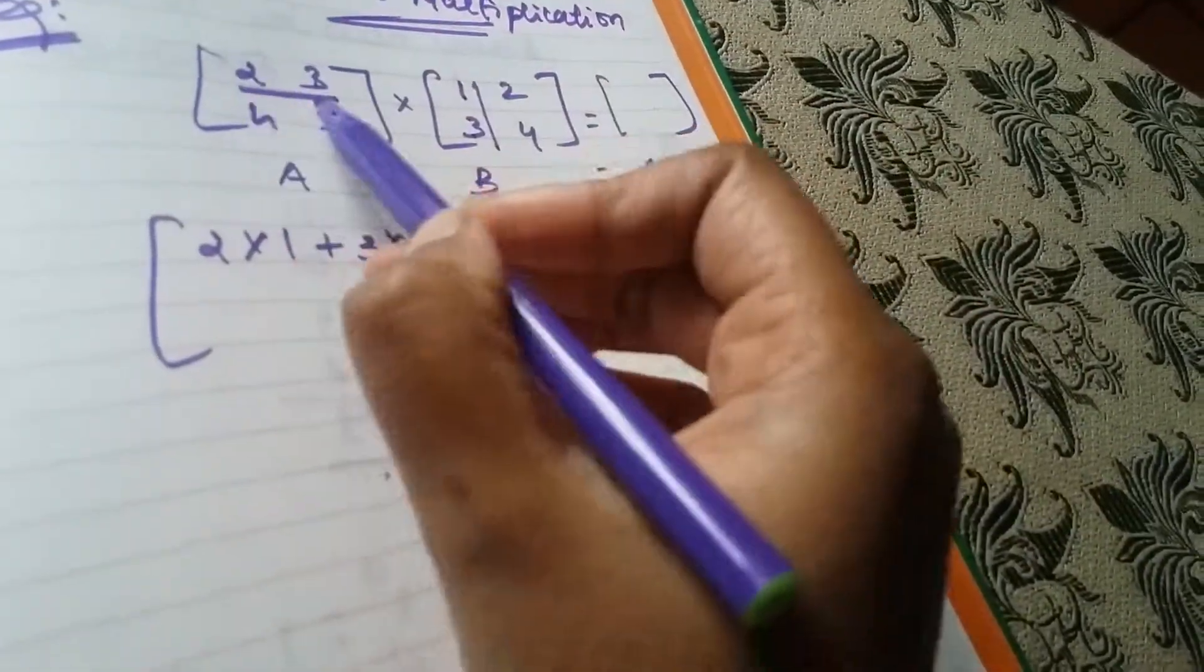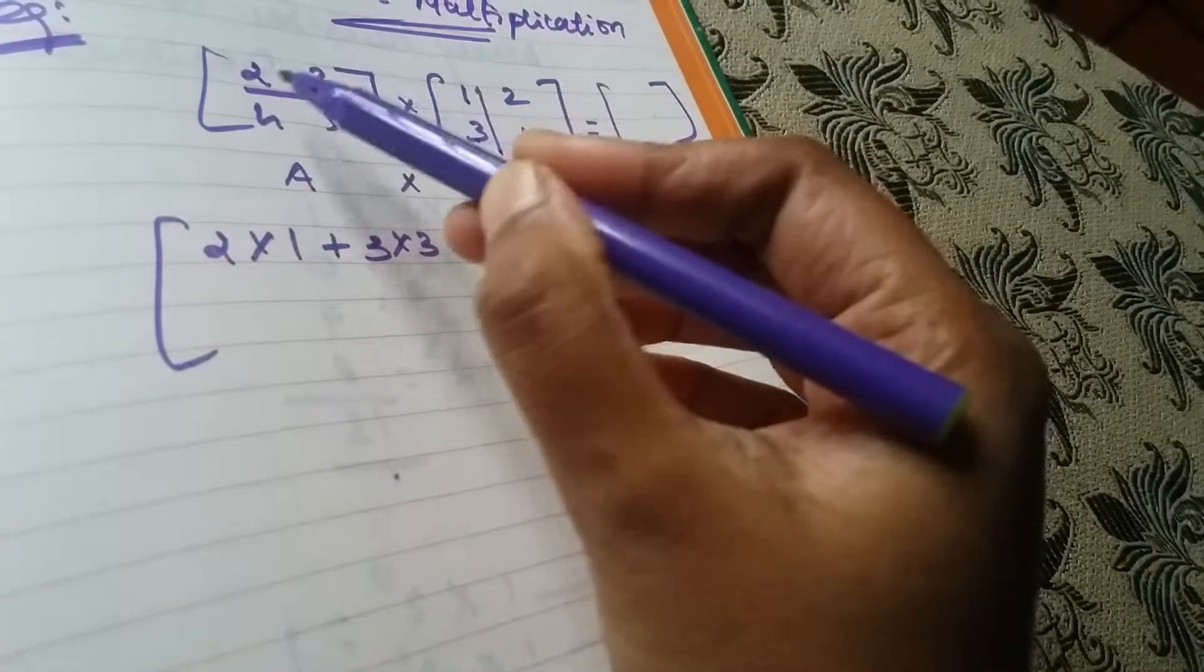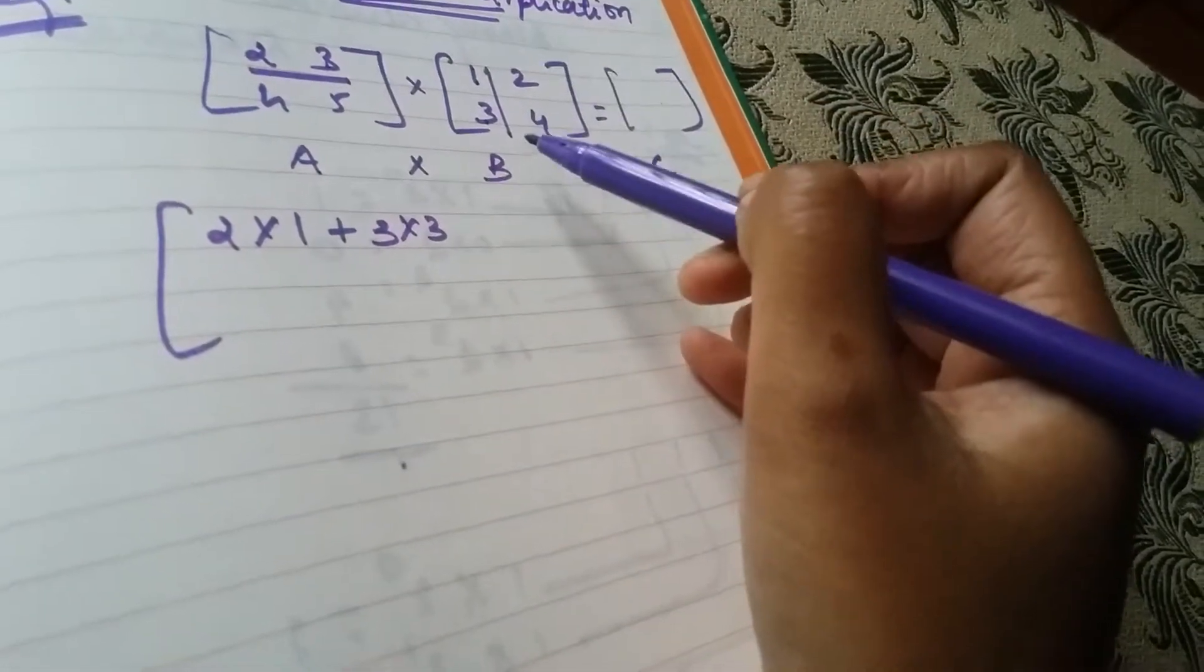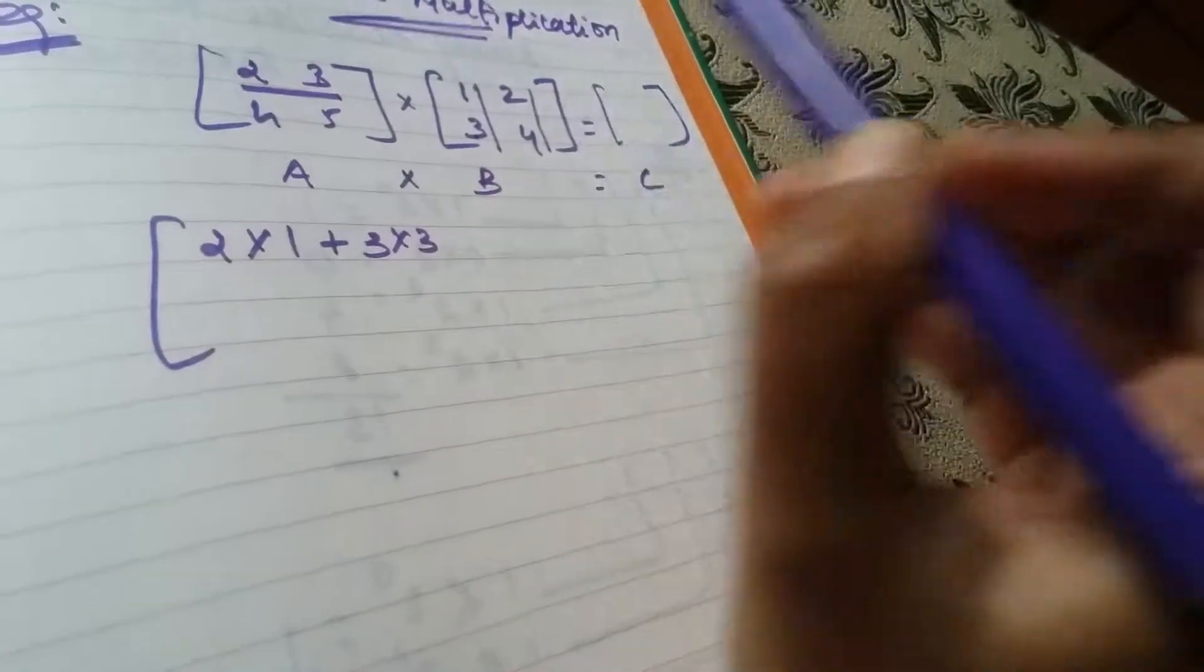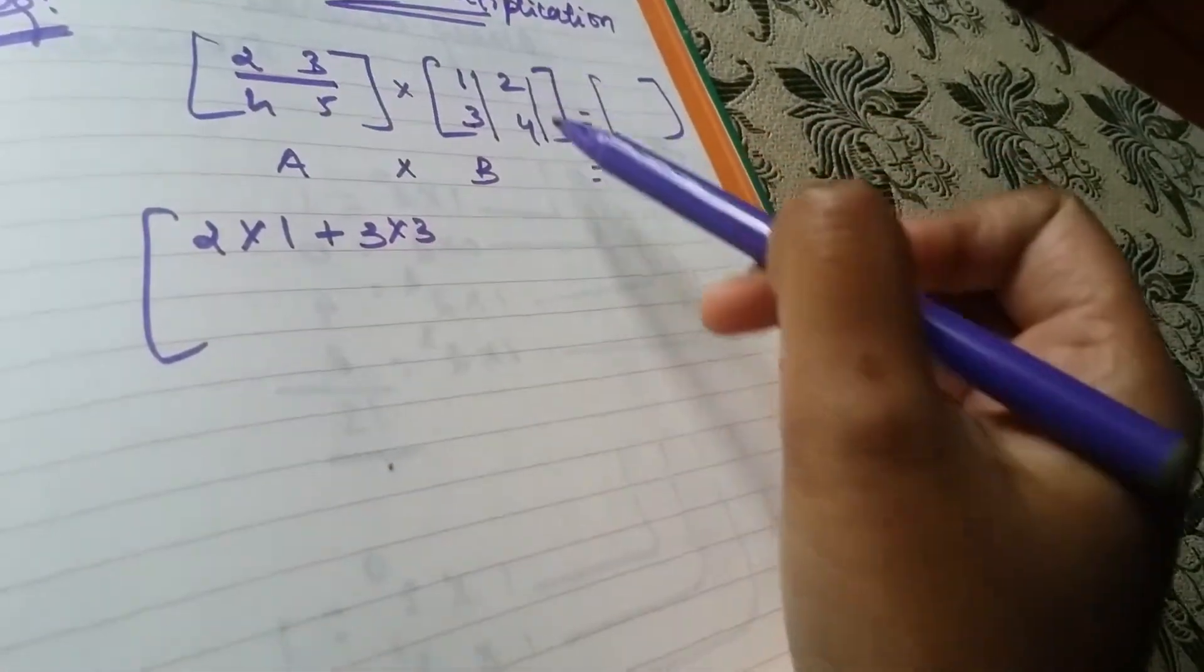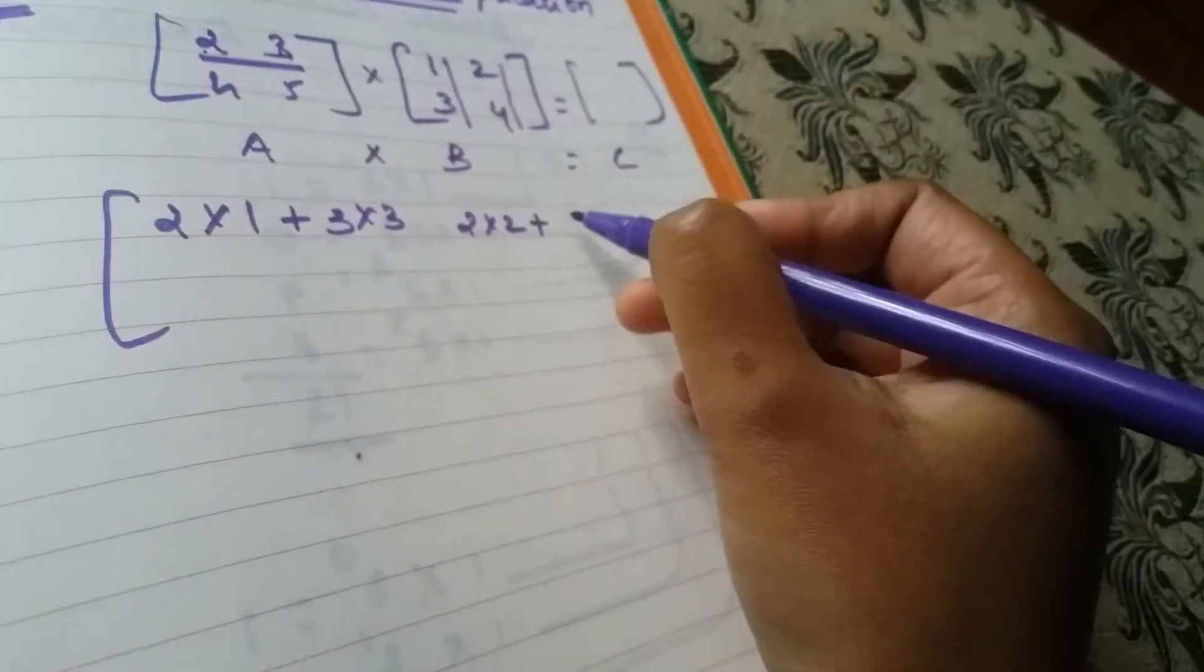First row, now we will find it. A first row, B second column. So 2 times 2 plus 3 times 4.